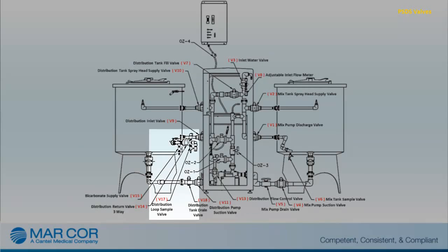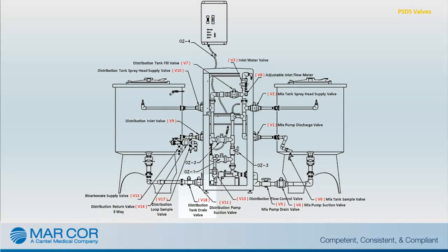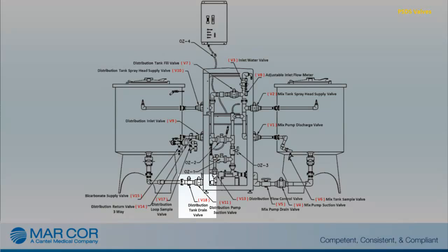When opened, V17, the Distribution Loop Sample Valve, acts as a sample port for the Distribution Tank. When opened, V18, the Distribution Tank Drain Valve, allows for draining of the Distribution Tank.